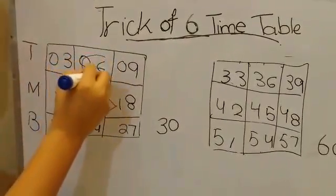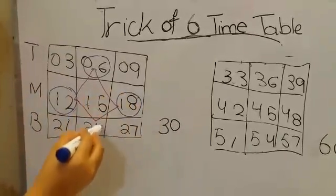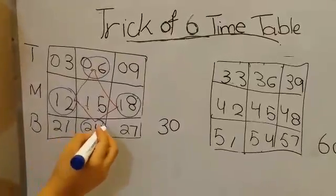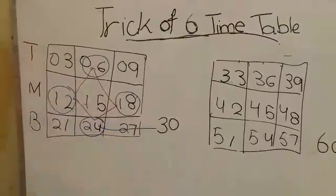We are going to circle those numbers that the diamond's corners are touching. So six, twelve, eighteen, twenty-four. And now we have to connect our twenty-four with thirty like this.